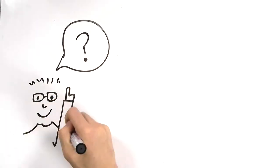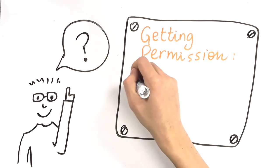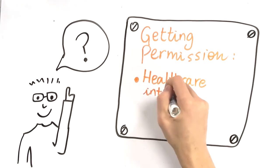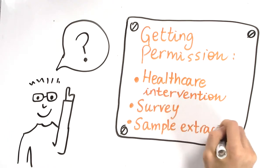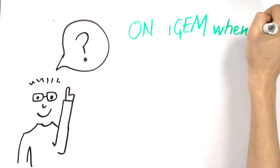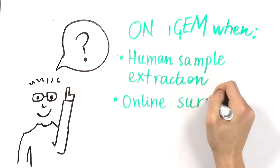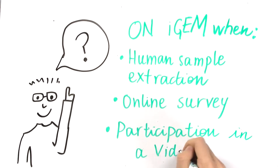Informed consent is a process for getting permission before conducting a healthcare intervention, a survey, or sample extraction on a person. It should be included in all iGEM projects that collect responses from the public for future use. Examples include human sample extraction, online surveys, or participation in video games.